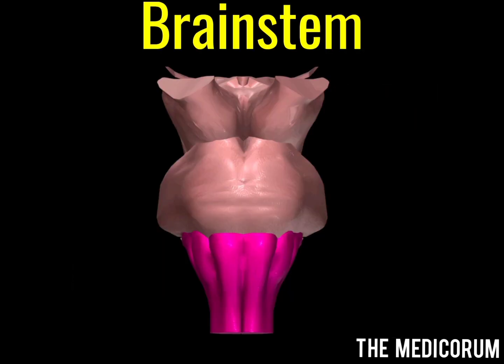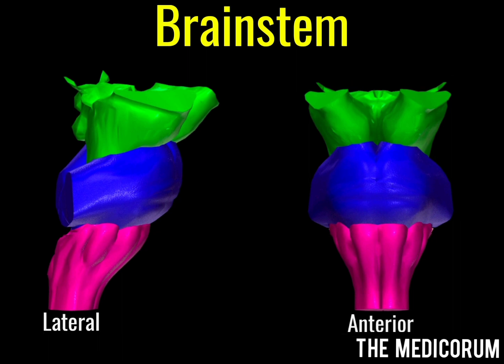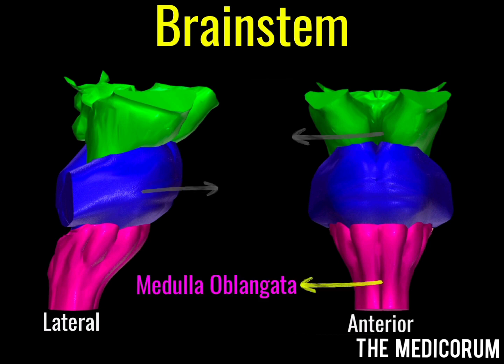Coming on to the brainstem — medulla oblongata is a part of the brainstem. As you can see in this diagram, we have the lateral as well as the anterior view of the brainstem. The brainstem comprises of medulla oblongata, pons, and midbrain.